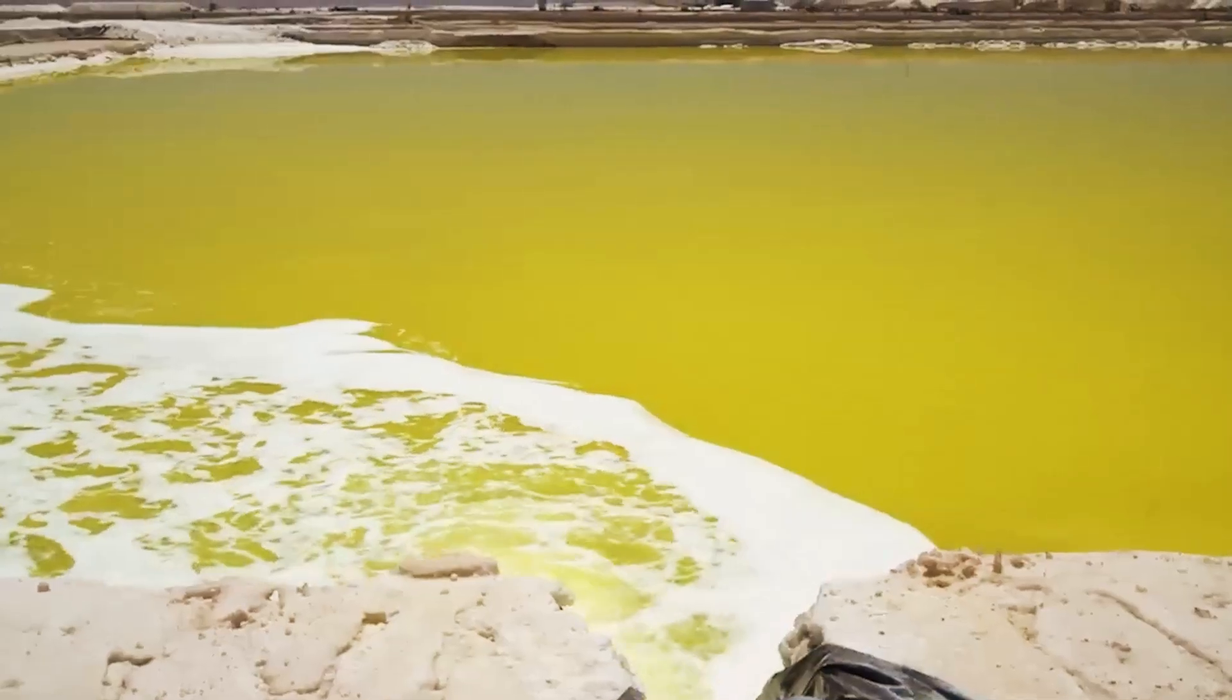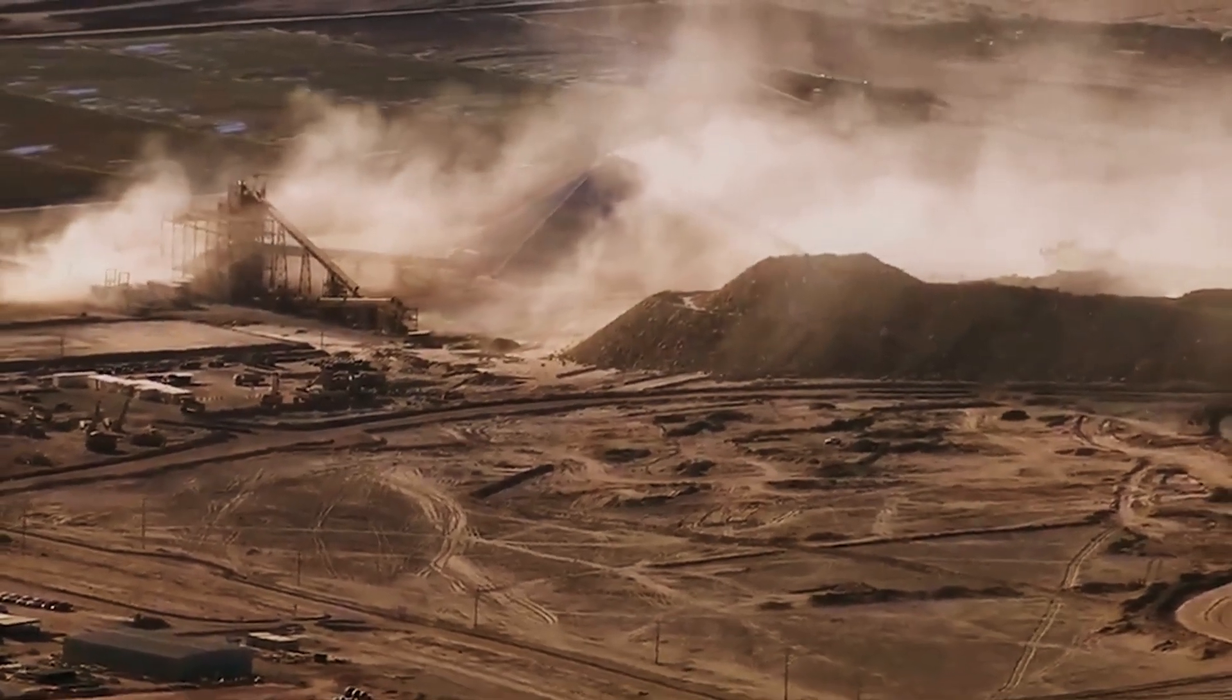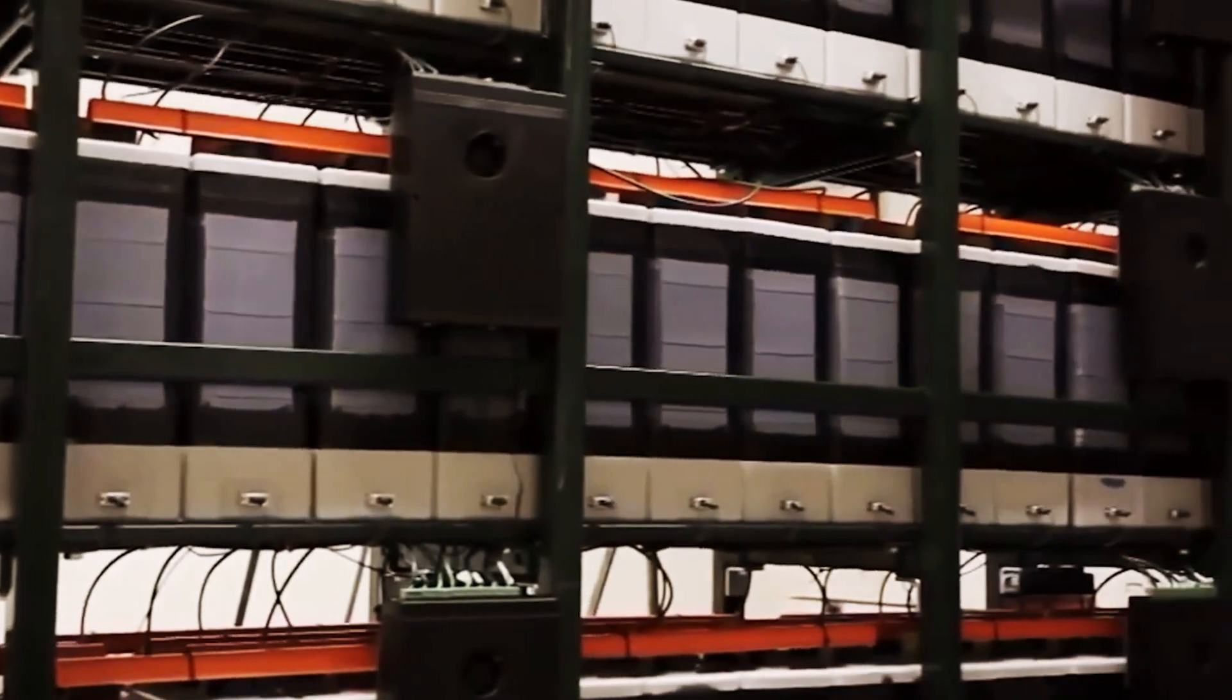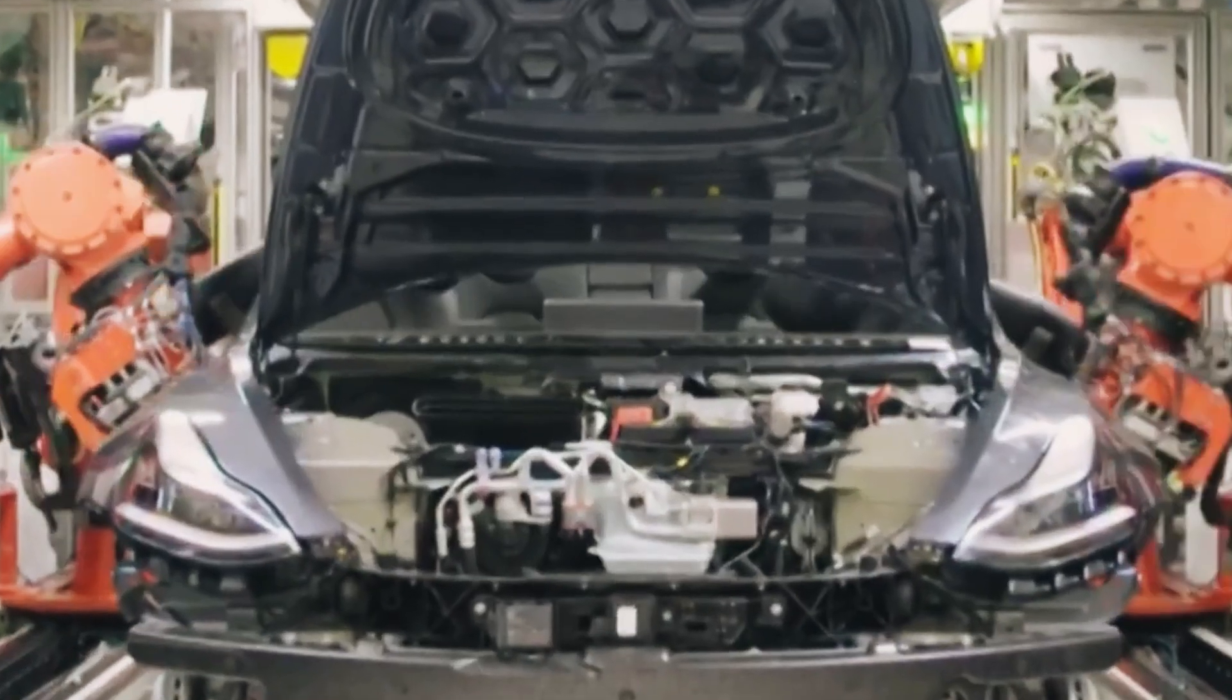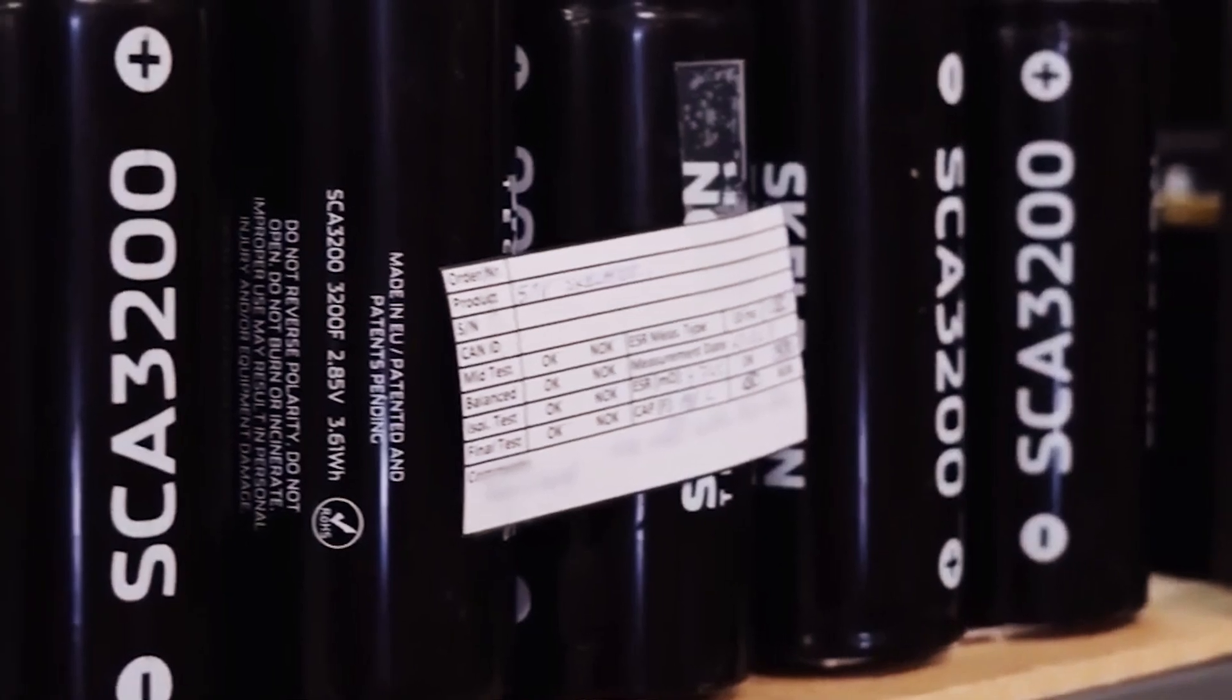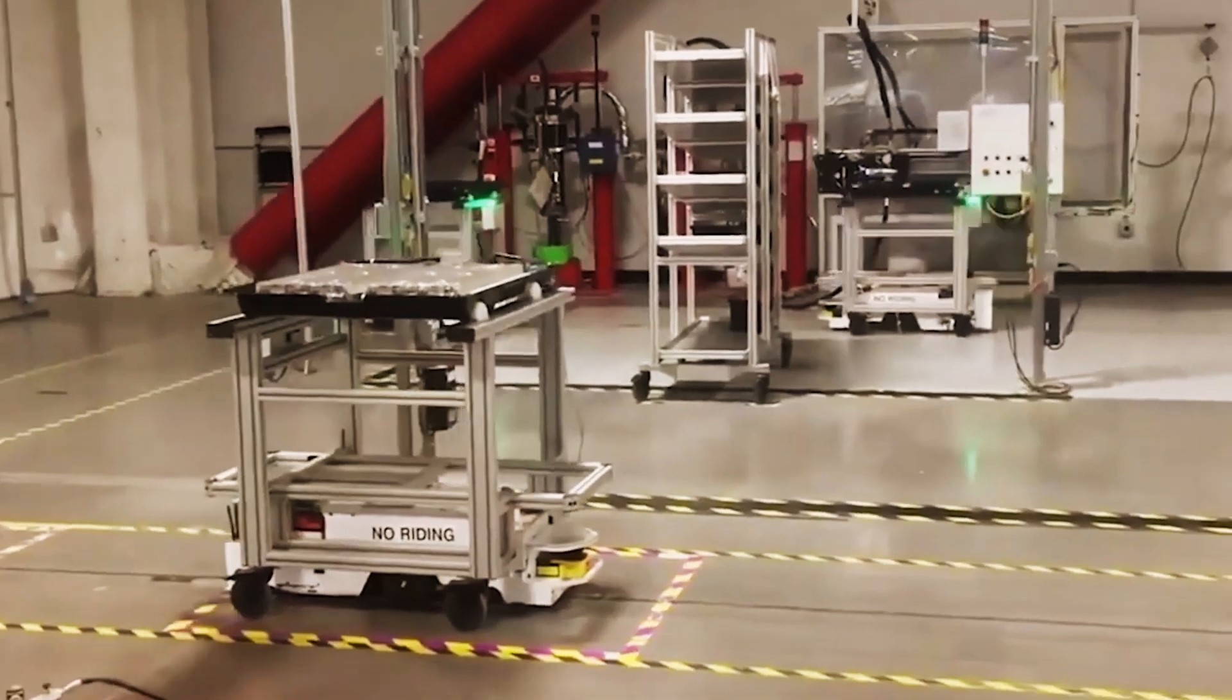However, lithium-ion batteries have significant disadvantages. Their production and maintenance costs are high, requiring rare and expensive materials like cobalt and nickel. Moreover, they are vulnerable to overheating and risks of fire and explosion in case of damage or defects. Their range and charging speed are limited, necessitating special care during charging. And importantly, they have a negative environmental impact, generating harmful emissions and waste. With this in mind, manganese batteries emerge as a promising alternative.